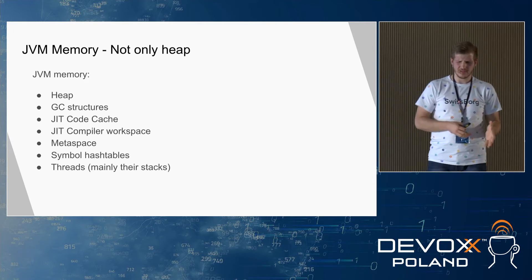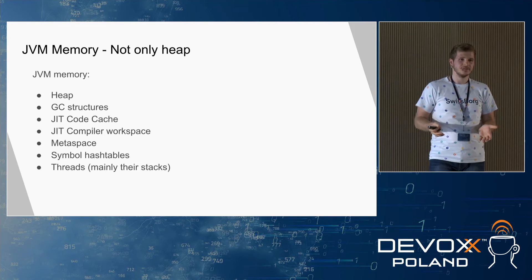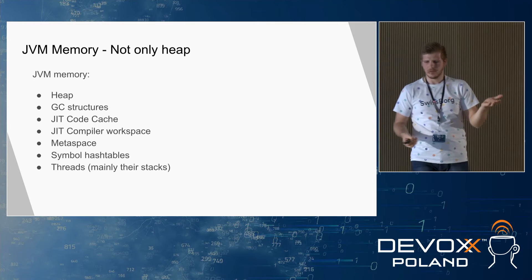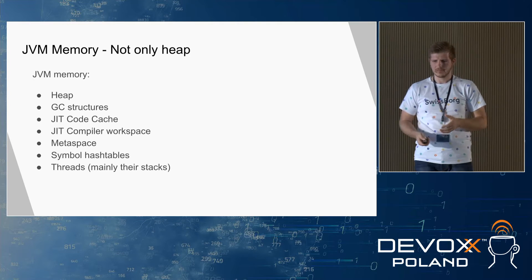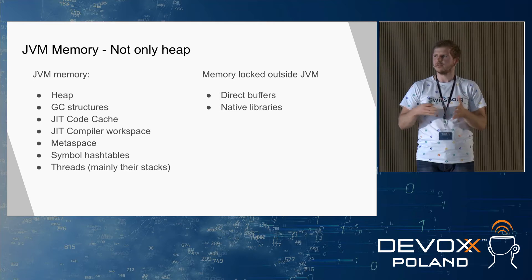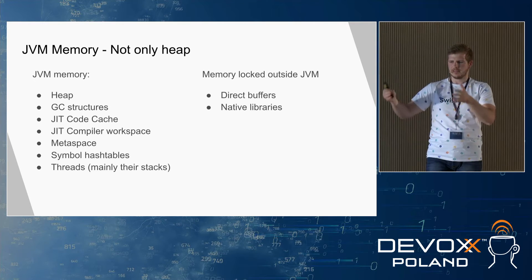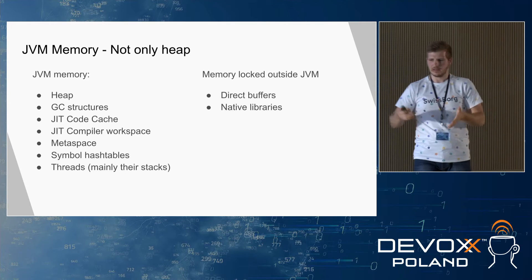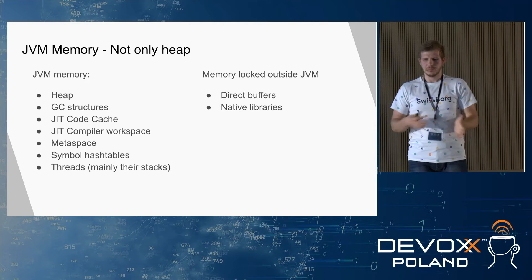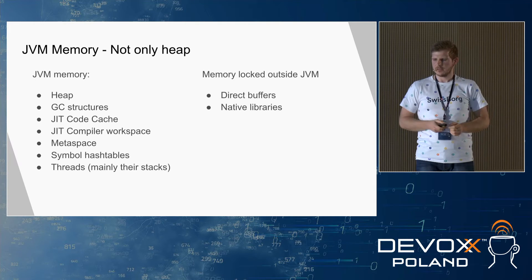An important thing we often forget: there is also some memory needed by JVM that is outside of it — not assigned to the JVM process. When JVM allocates memory outside the heap, it's being taken from the system but not identified as memory consumed by JVM. These are direct buffers. Also, when JVM uses native libraries, memory consumed by those native libraries is not accounted for the JVM process. So we need to keep in mind there is some memory still used outside of JVM.